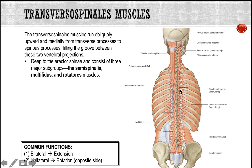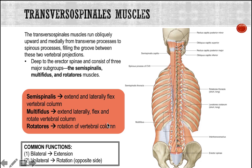The transversospinalis muscles are subdivided into three subgroups: the semispinalis, which extend and laterally flex the vertebral column and are the longest running obliquely; the multifidus in the lumbar region, which extend, laterally flex, and rotate the vertebral column; and the rotatores, the smallest muscles, which function to rotate the vertebral column. Working bilaterally they extend the back; working unilaterally they rotate the back. And that is all for reviewing the muscles of the back.